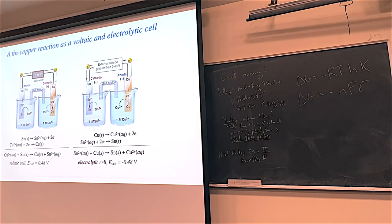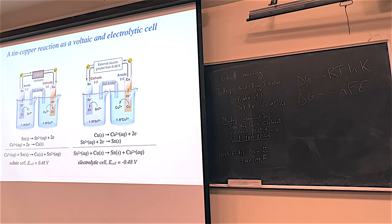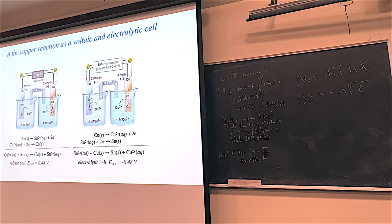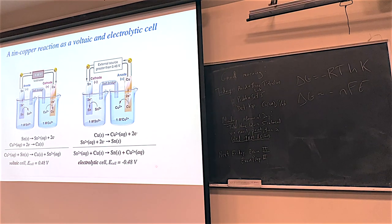Copper 2+ and tin metal will, by default, make copper metal and tin 2+, because the cell potential is a positive number — 0.48 volts. An electrolytic cell is basically the opposite: tin 2+ and copper react to make tin metal and copper 2+. That cell potential is negative. A negative E cell implies a positive delta G — thermodynamically disfavored. However, if you apply 0.48 volts from an external source, you can make these things happen. You need external sources of energy for an electrolytic cell, and many chemicals we've used in Chem 221 through 223 have been made this way.